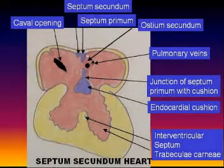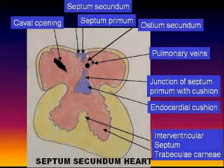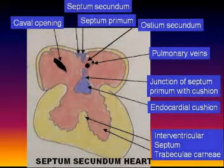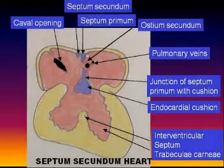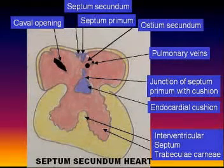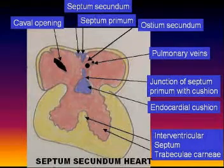It then becomes detached on the top with the formation of the ostium secundum behind it and the obliteration of the ostium primum as it joins the endocardial cushion. The ostium secundum then becomes the foramen ovale at the mature six-week heart.